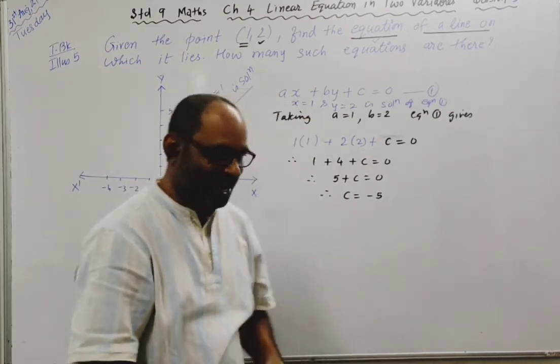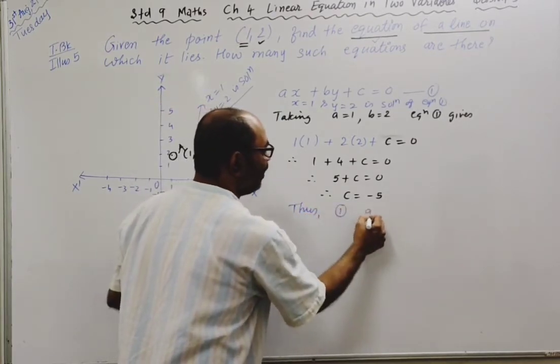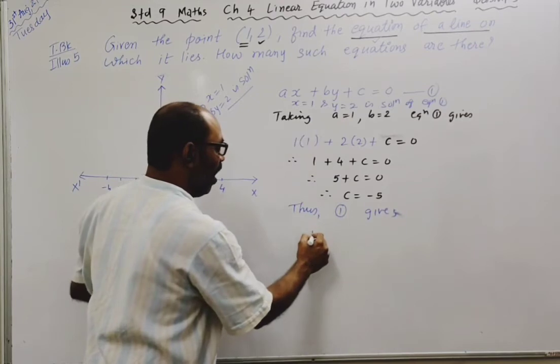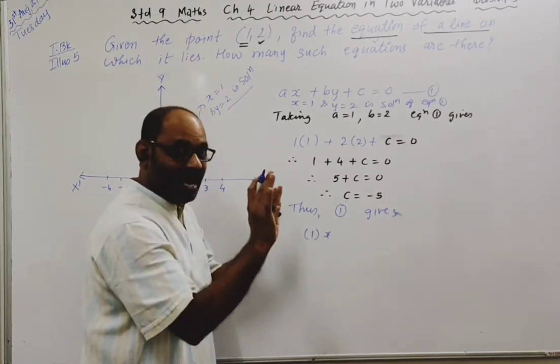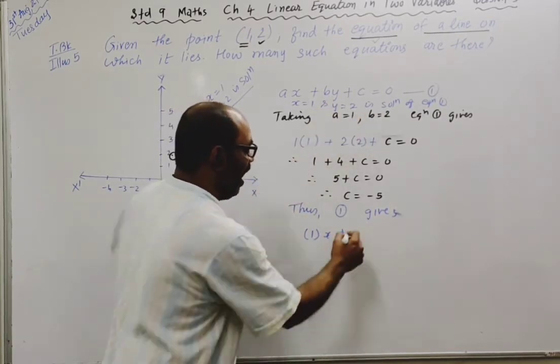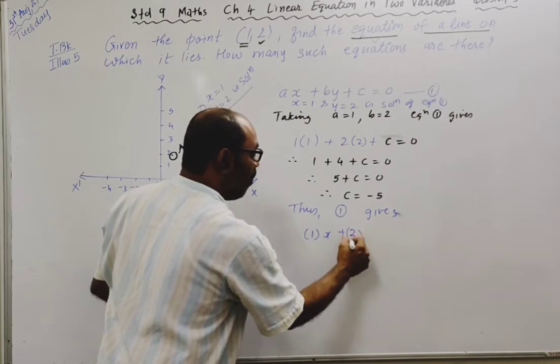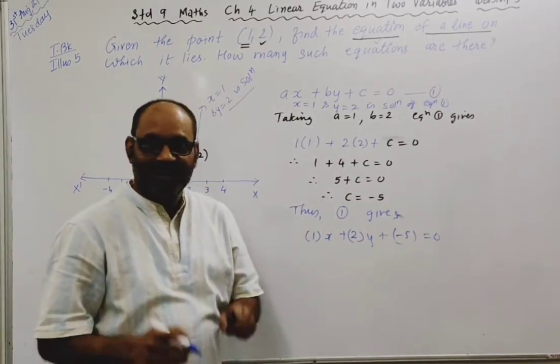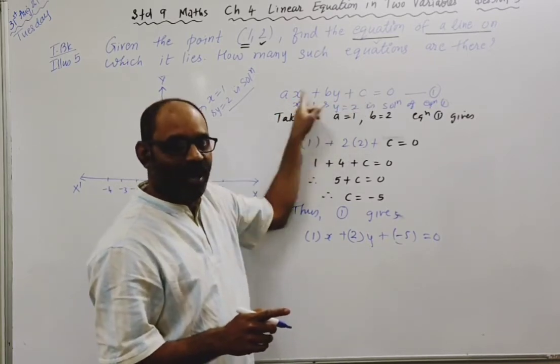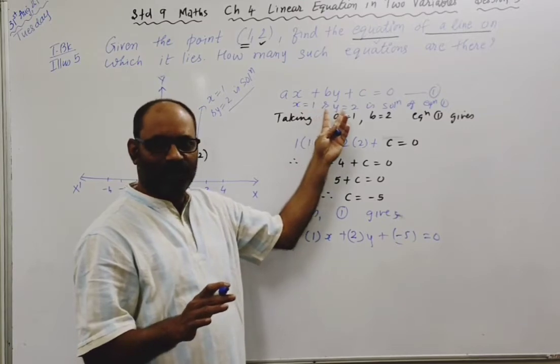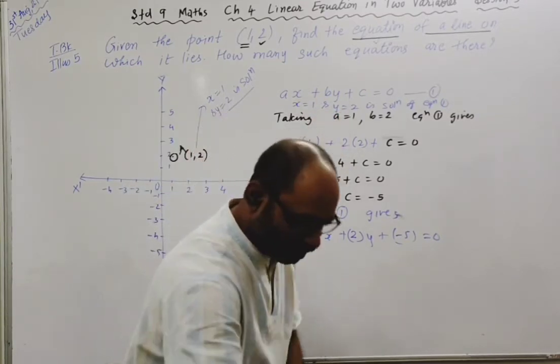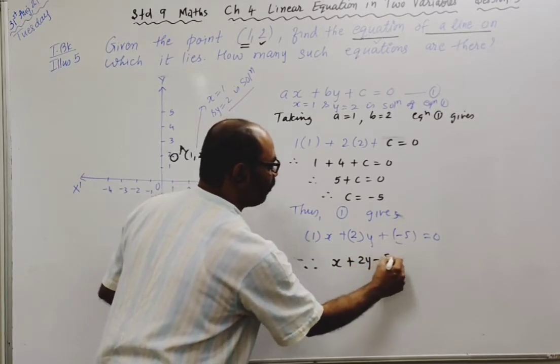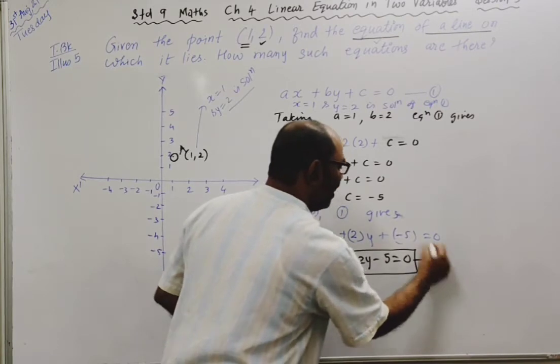Thus, equation one gives: a is one, so 1·x, we won't put the x value, plus b which is two times y, plus c which is minus five, equals zero. Therefore, x + 2y - 5 = 0. This is the equation of the line on which this ordered pair lies.